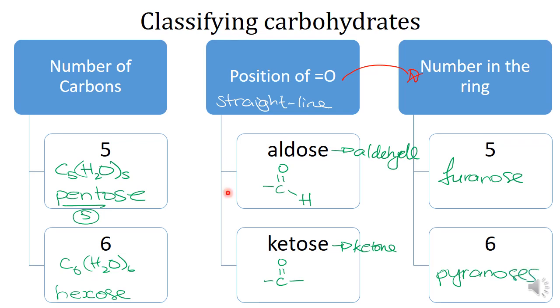Now in terms of what you need to know for the exam, you need to know aldose versus ketose. Bio people, a pentose sugar is something like ribose, which is what we see in DNA and RNA. Furanoses and pyranoses also come up in some more advanced biology. For our purposes today, we mostly care about the distinction between aldoses and ketoses, but you should be able to work that out based on your memory of organic chem.